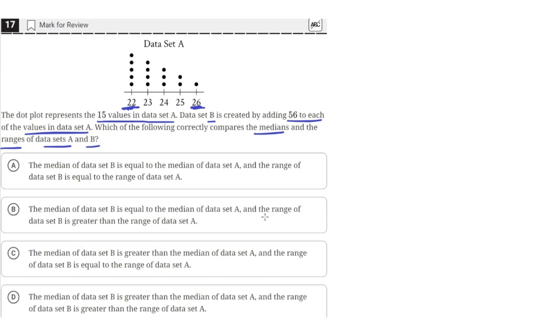So here, answer choice B is saying the range of data set B is greater than the range of data set A, so that's wrong. And then answer choice D is saying the range of data set B is greater than the range of data set A, so that is also wrong. So it's between A and C.